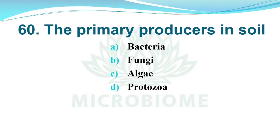And next, the primary producers in soil. Options: A) Bacteria, B) Fungi, C) Algae, D) Protozoa. The right answer is Option C, Algae.